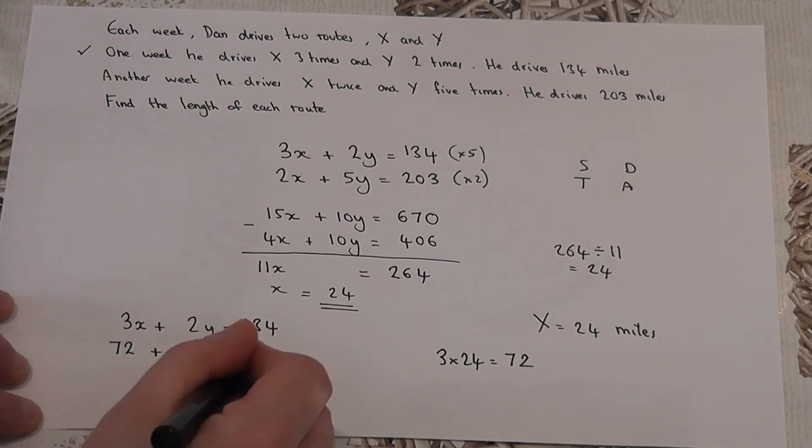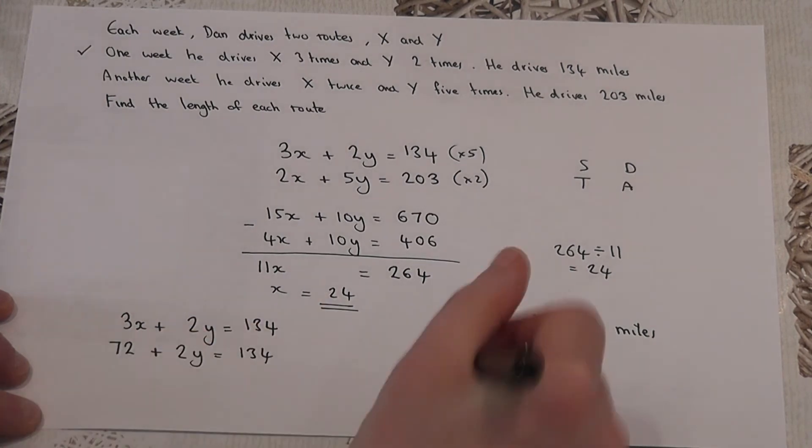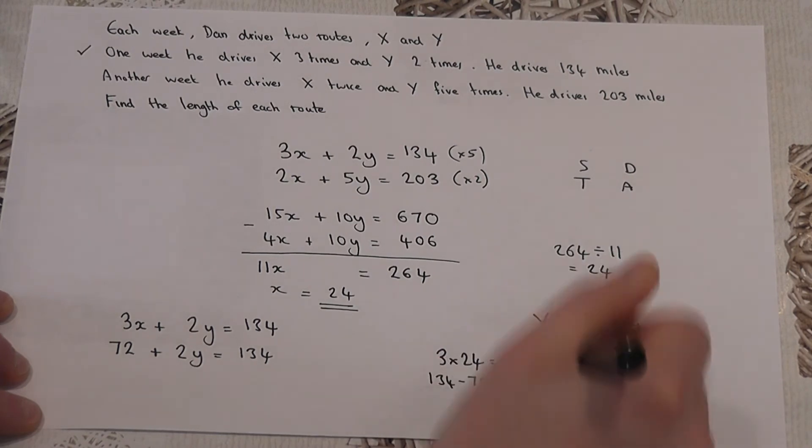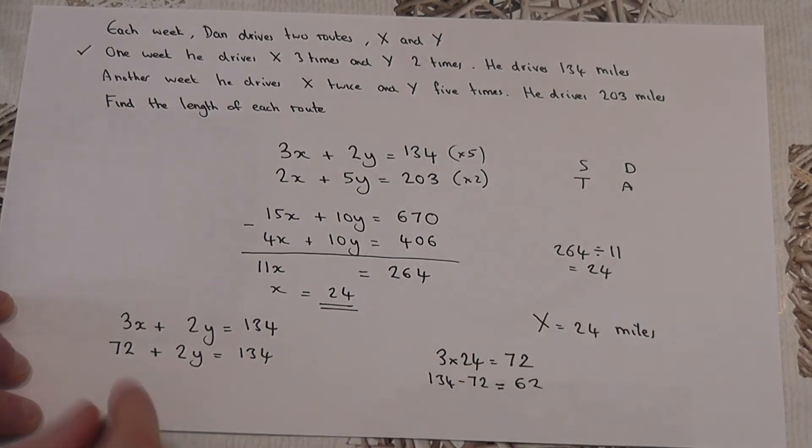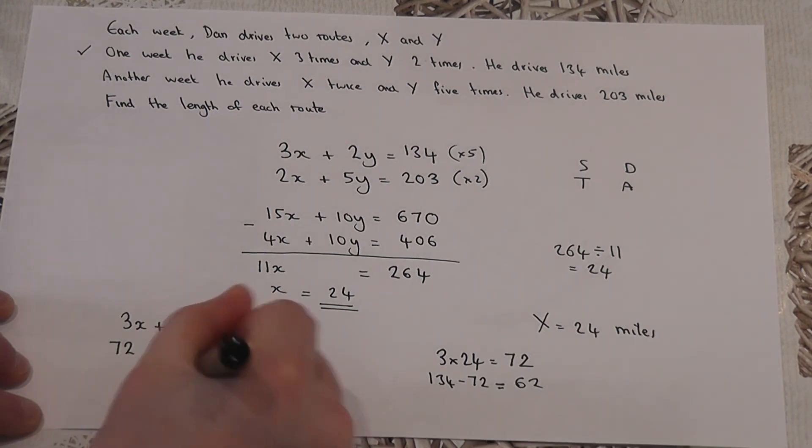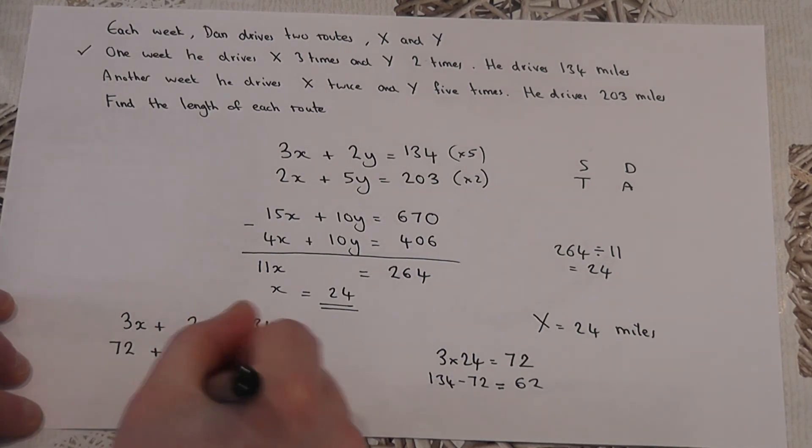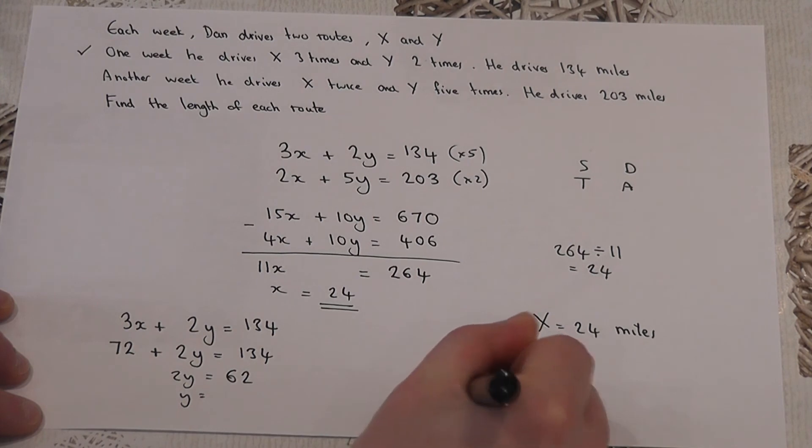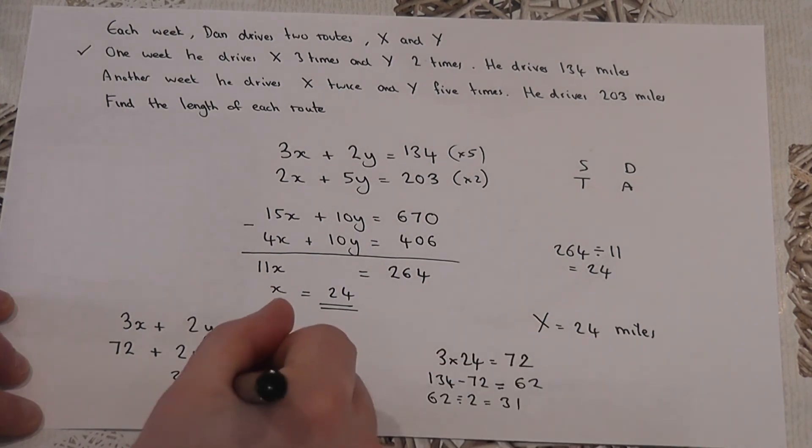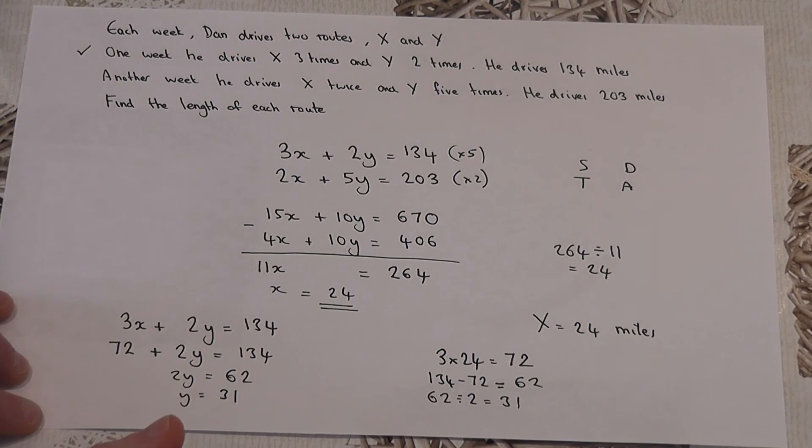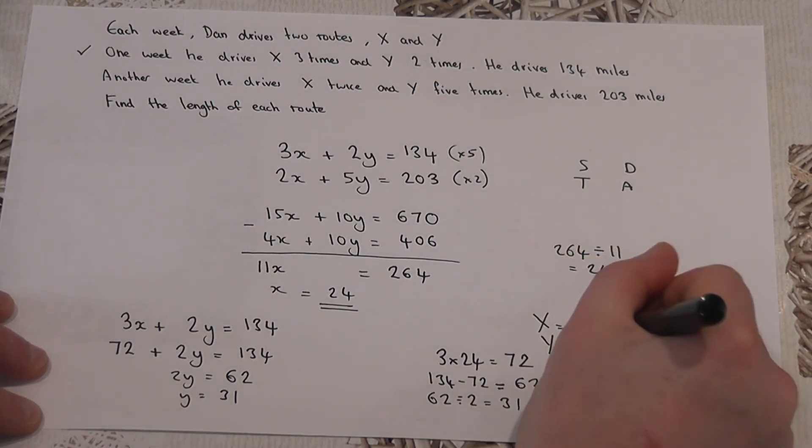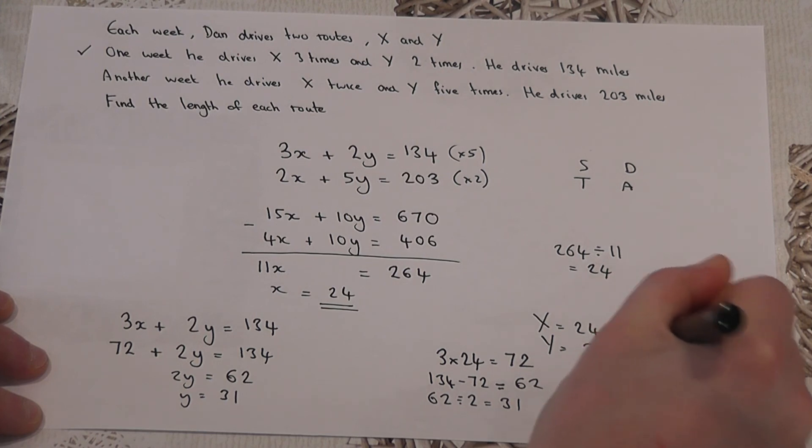Which is 62. So, 2y, this unknown number, must equal 62. So, 2 lots of y is 62. To find y, I do 62 divided by 2, which is 31. So, y is 31, which means that the length of route y is 31 miles.